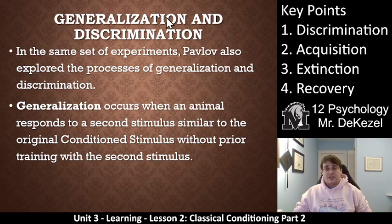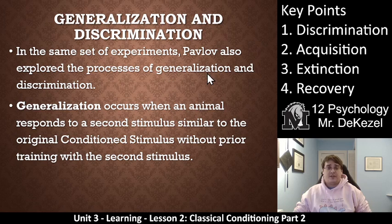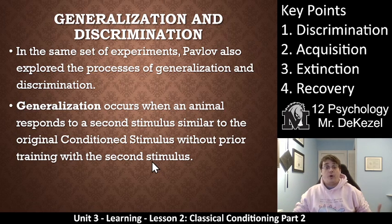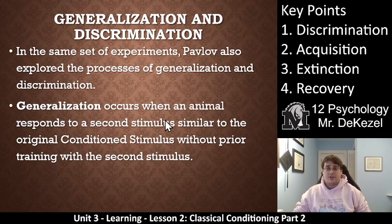Key point one is generalization and discrimination, from the same set of experiments discussed in part one. Pavlov also explored the process of generalization and discrimination. Generalization occurs when an animal responds to a stimulus that is similar to the original conditioned stimulus without prior training with that stimulus — maybe reacting to a different tone of a bell, a different tuning fork, or a horn instead of a bell. They generalize sounds essentially; it doesn't have to be the exact same whistle every single time.